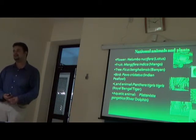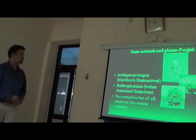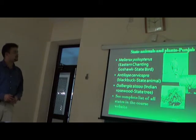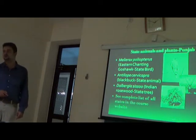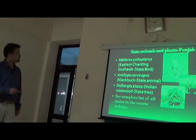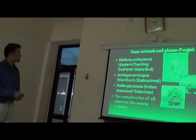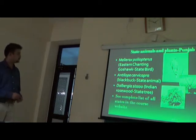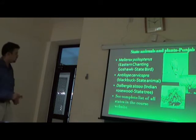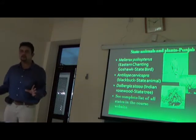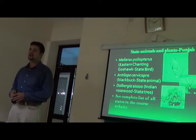For Punjab state, the state bird is the eastern chanting goshawk — Melierax poliopterus — and the state animal is the blackbuck or antelope — Antilope cervicapra. The state tree is Indian rosewood — Dalbergia sissoo. There is no shortcut — you just have to memorize these names.